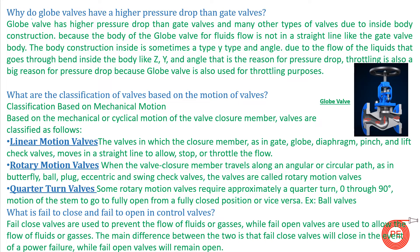The next question is: why do globe valves have a higher pressure drop than gate valves? Globe valves are basically used for controlling flow as well as for on/off service. Globe valves have a higher pressure drop because of their construction — the valve body is designed such that fluid has to flow in a zigzag motion, in a Y-direction or Z-type direction. Because the flow has to change its direction many times, there is a considerable pressure drop inside the valve.